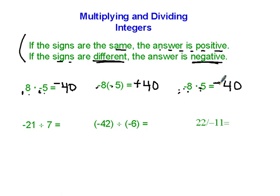Same thing works with division. 21 divided by 7 is 3. Is the answer positive or negative? Well, the signs are different, so the answer is negative.